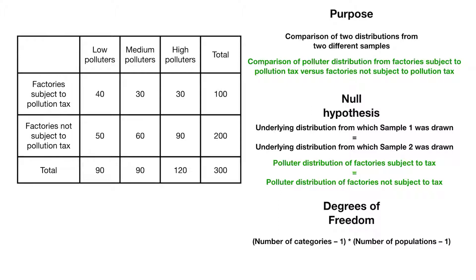Now here's where things change. The degrees of freedom is the number of categories — which in this case is three: low, medium, and high polluters — minus one, times the number of populations minus one. There are two populations: factories subject to the tax and not subject to the tax. So the degrees of freedom here is three minus one times two minus one, which is two times one, so two.